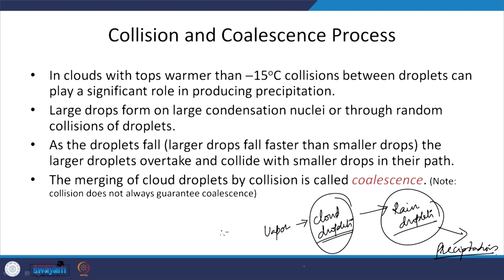The processes by which cloud droplets grow into rain droplets are collision and coalescence — coalescence combines the effects of collision. Large drops form on large condensation nuclei or through random collisions of droplets. As droplets fall inside the cloud, larger droplets fall faster than smaller droplets. The larger droplets overtake and collide with smaller droplets in their path. The merging of tiny cloud droplets by collision is generally called coalescence, though collision does not always guarantee coalescence. Coalescence is a process in which a droplet of given size grows larger by combining with smaller droplets.